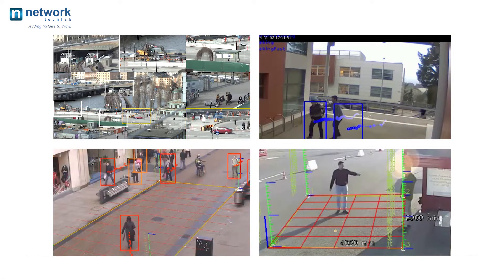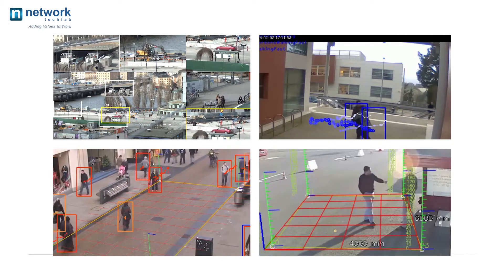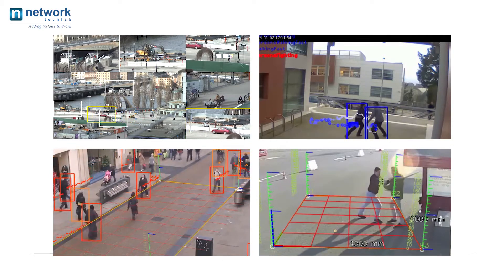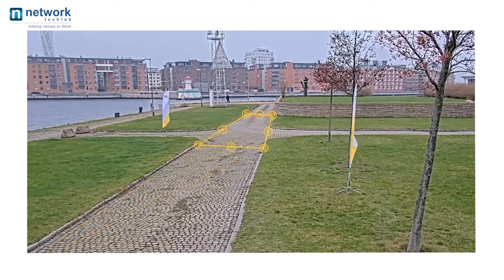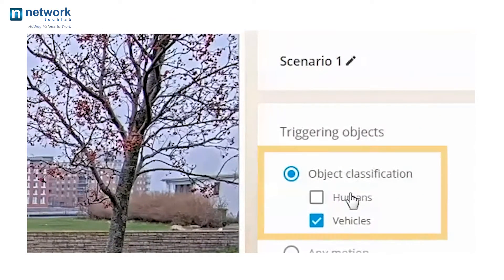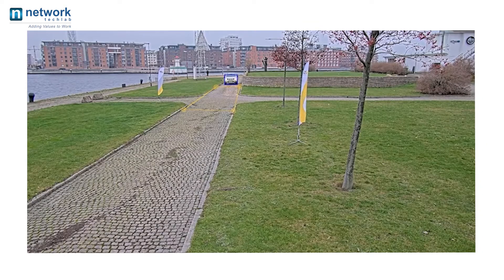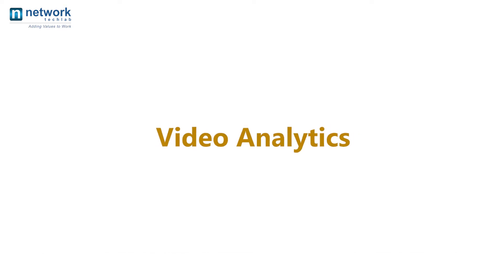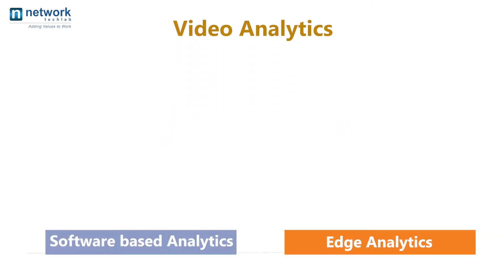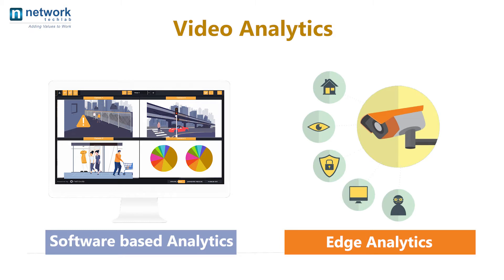Each video analytics solution works a bit differently depending on the manufacturer and application, but they all work in the same basic way. When setting up the software, you set parameters for the activity the software is looking for, set up the alert notification system, and when the software detects something that meets its search criteria, it alerts you. Video analytics is available in various forms, such as software-based video analytics and edge analytics built into the camera model.